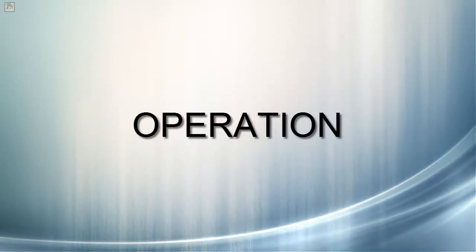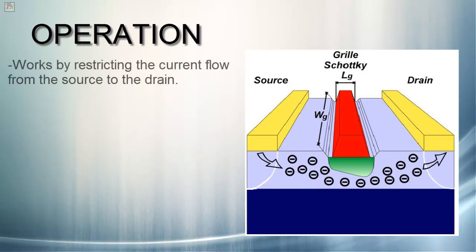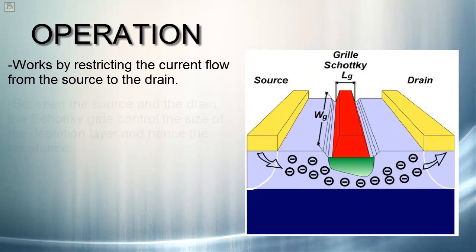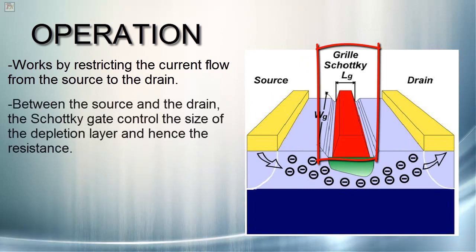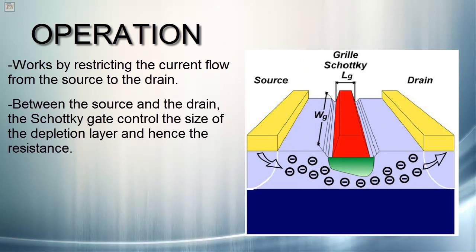The MESFET, like other field-effect transistors, works by restricting the current flow from the source to the drain. In between the source and the drain is the Schottky gate, which is responsible for controlling the size of the depletion layer and hence the resistance. By varying the voltage across the Schottky gate, the size of the depletion layer can be controlled.